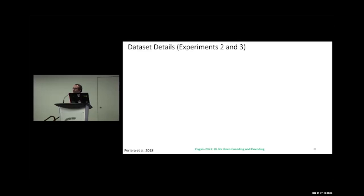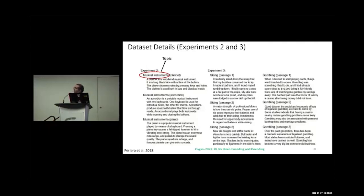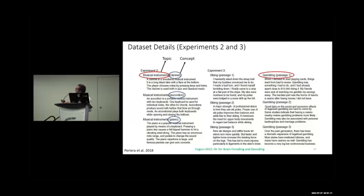Experiments two and three are mostly related to passage reading. In experiment two, the topic is musical instruments, with subtopics like clarinet and accordion. In experiment three, the topic is gambling and all passages are related to gambling, with no subtopic involved.